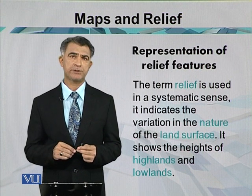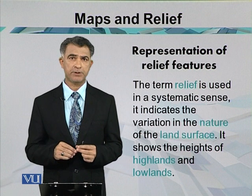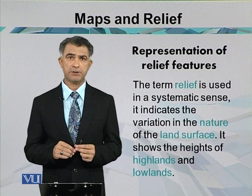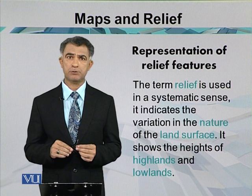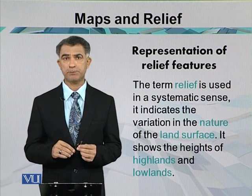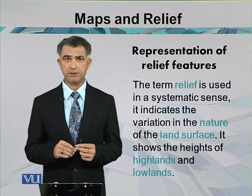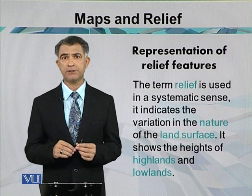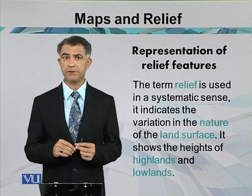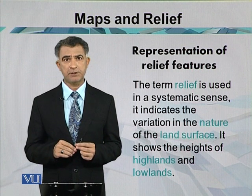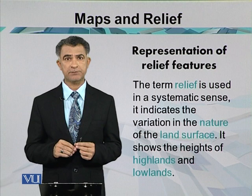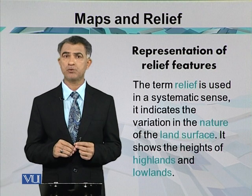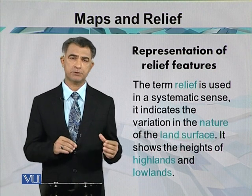Most of the north of Pakistan is covered with highlands, ranging from 20,000 to 25,000 feet above sea level. In contrast, Lahore city is at only 700 feet above sea level. So the heights gradually decrease as you move from north to south of the country.